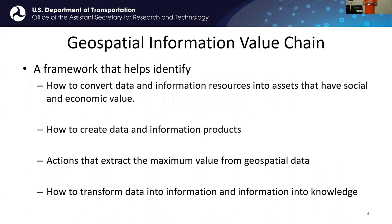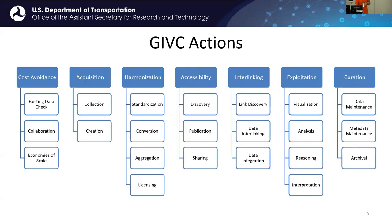The geospatial information value chain is a framework that helps us think about how we convert data and information resources into assets that have social and economic value — creating data and information products, taking action to extract maximum value from geospatial information, and transforming data into information and hopefully knowledge. The actions are: cost avoidance, acquisition, harmonization, accessibility, interlinking, exploitation, and curation.